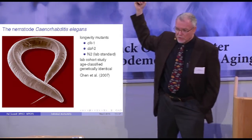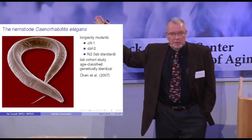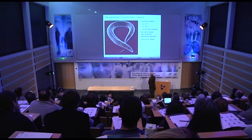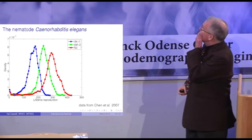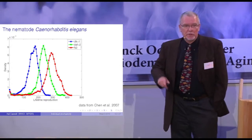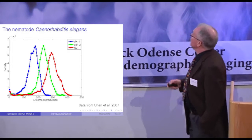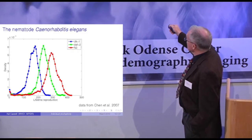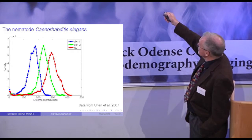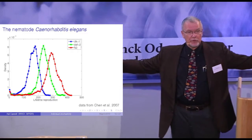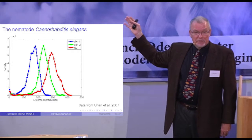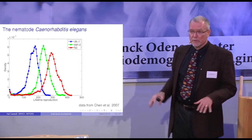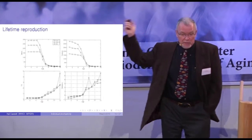This is a nematode — Caenorhabditis elegans, every molecular biologist's favorite nematode. The data I'm going to analyze came from a study comparing two mutants that have about twice the longevity of N2, the basic off-the-shelf laboratory nematode. This is the distribution of lifetime reproduction in an experiment from these three strains. The N2 strain has higher lifetime reproduction than the DAF-2 strain, which has higher lifetime reproduction than the CLK-1 strain. But there's a lot of variation, even though organisms within each strain are genetically identical and living in an environment as uniform as nematode biologists can make it.